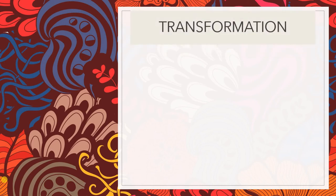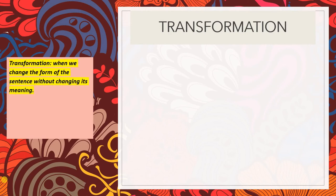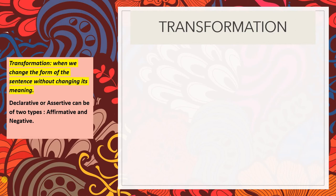What do we understand by the concept of transformation? It literally means to transform or change the form of one thing into another. In language, we are looking at the structure of the sentence — that is the form — and therefore transformation in language means changing the form of the sentence. But we must remember that when we change the form, the meaning remains intact. It doesn't get changed, otherwise the whole idea of reporting speech or saying something in various ways would be disturbed.